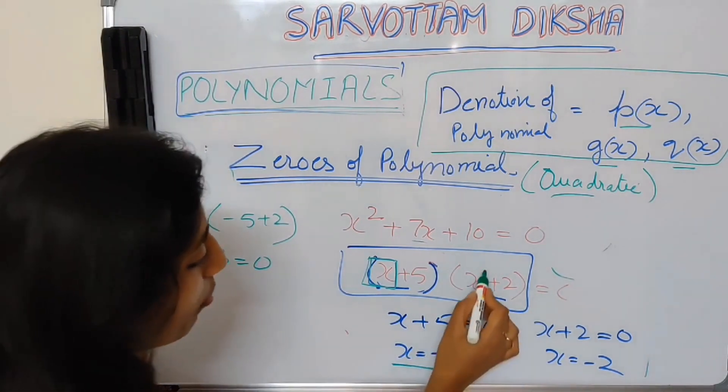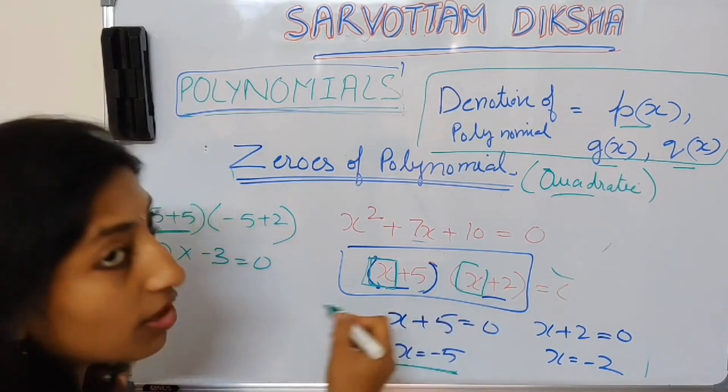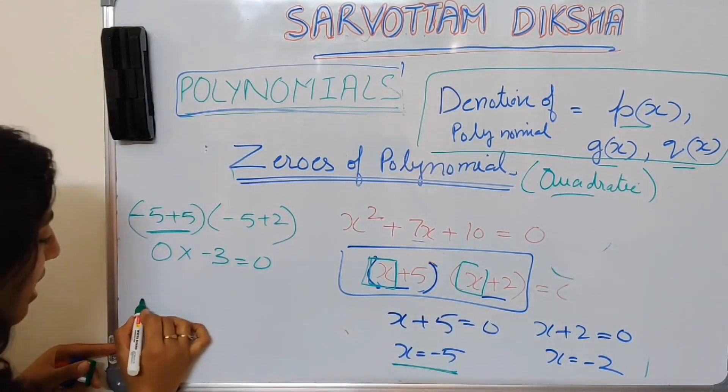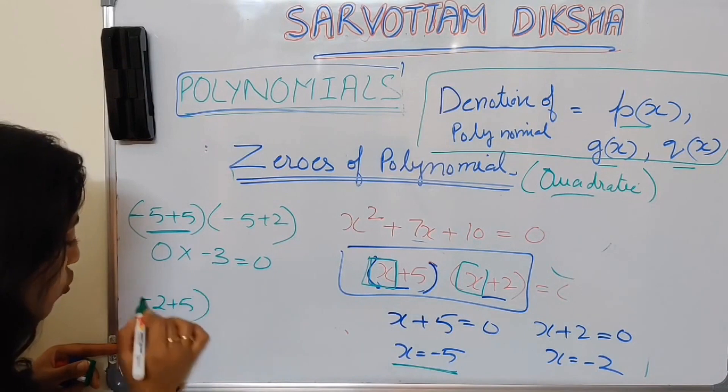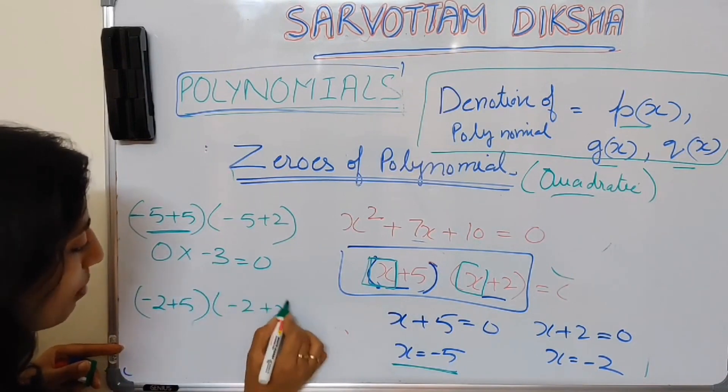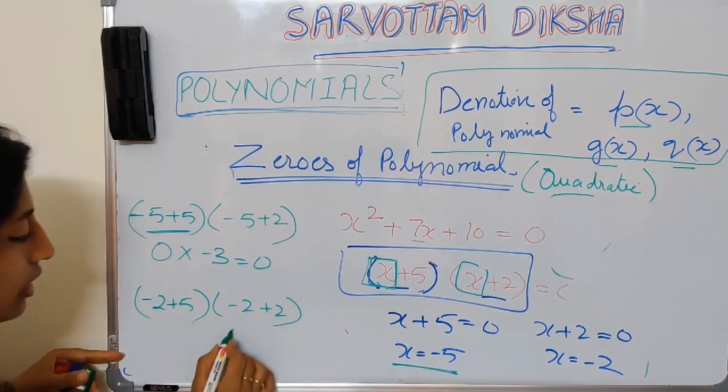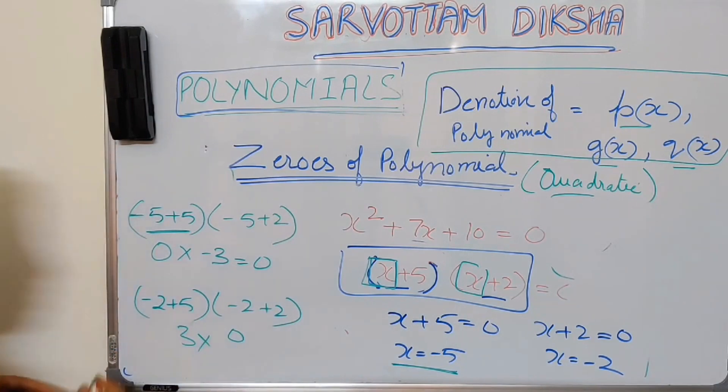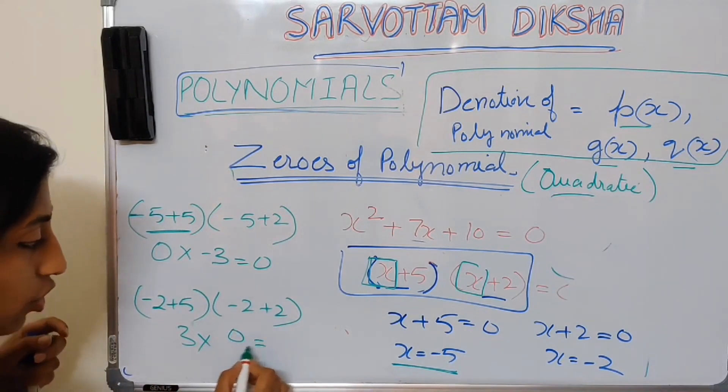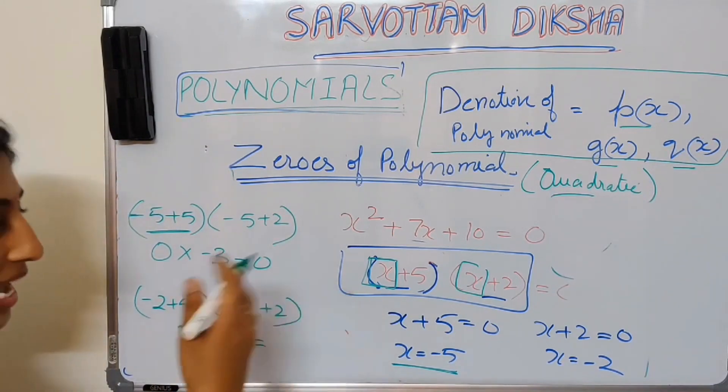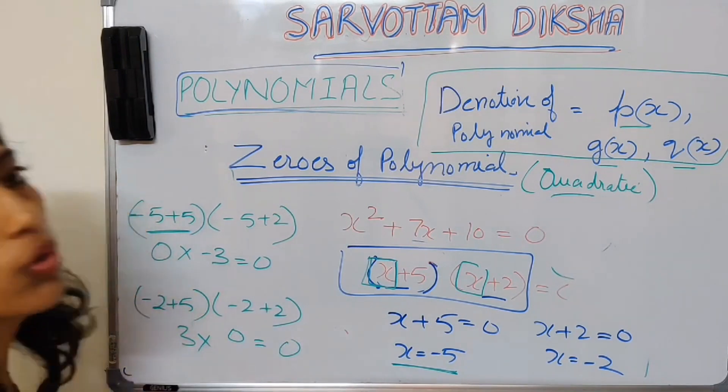Same way, let me put x as minus 2 in both the factors. When I am putting it as minus 2, I will get minus 2 plus 5, minus 2 plus 2. Minus 2 plus 2 is 0 and this is 3. Though we have got value of second factor is 3 after putting 2, but one of the factors has become 0, so the value of entire expression will be 0 only.